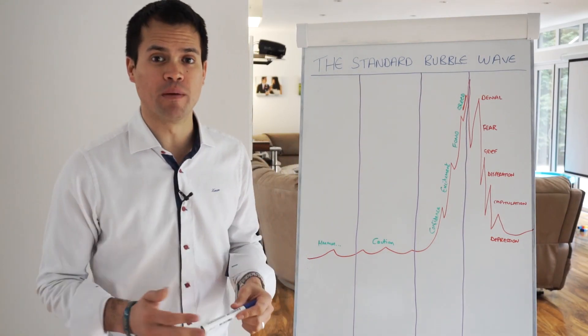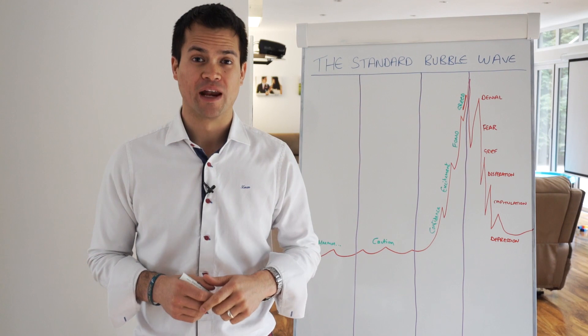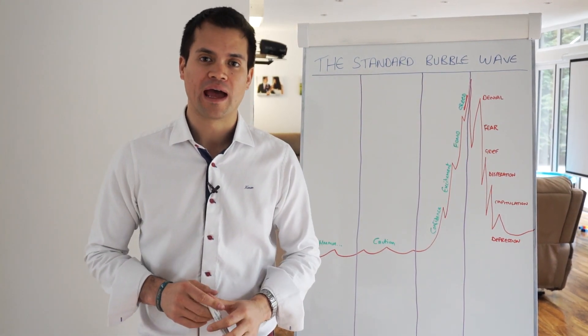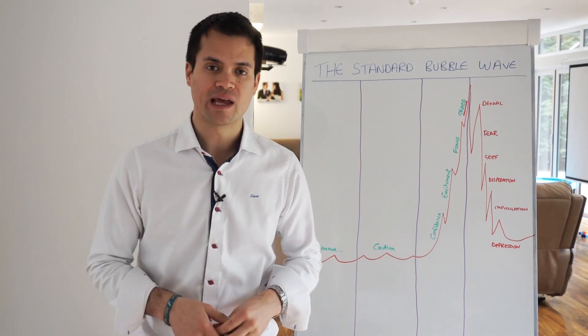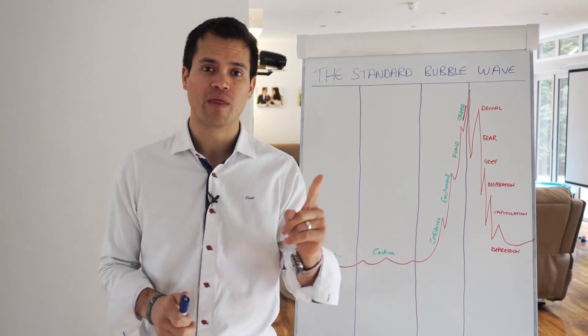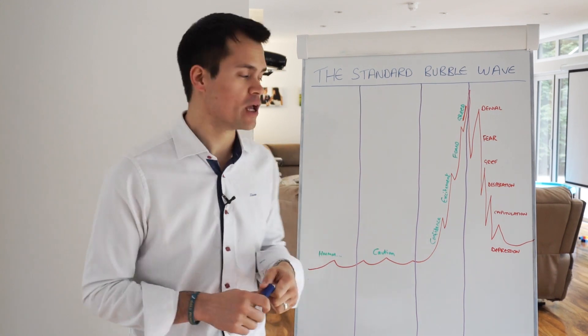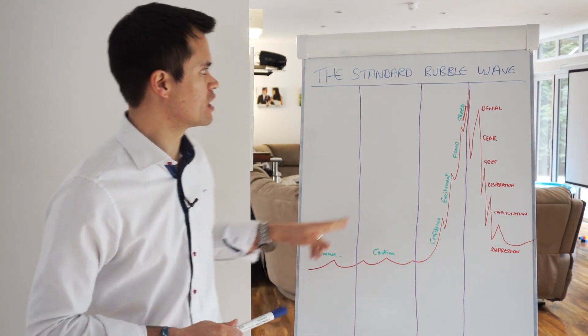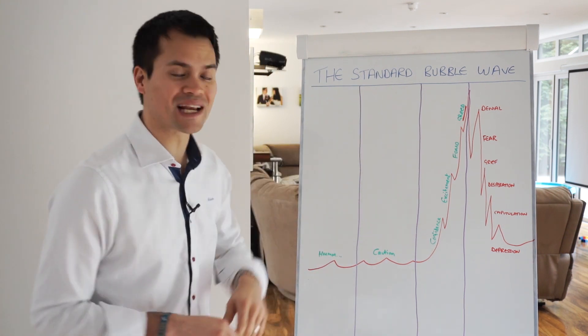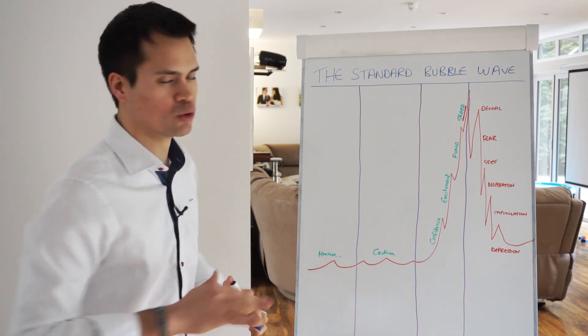Okay, so we're going to talk about the standard bubble wave right now. I'm a bit of a historian of money and I've researched pretty much every bubble there has ever been. Like I always say, in a world of ever-changing variables, new tech, new stuff, there's only one thing that never changes, which is human nature. As a result, we have a thing called a standard bubble wave where all bubbles move in exactly the same fashion, and along this you see all sorts of different emotions.